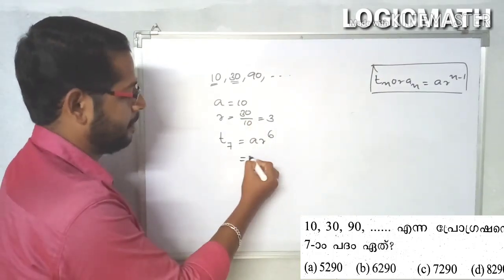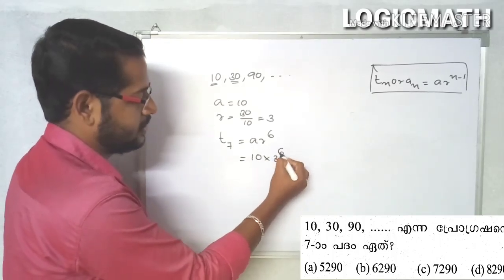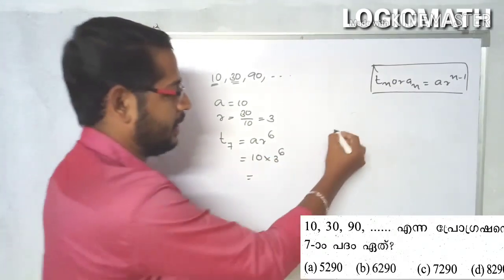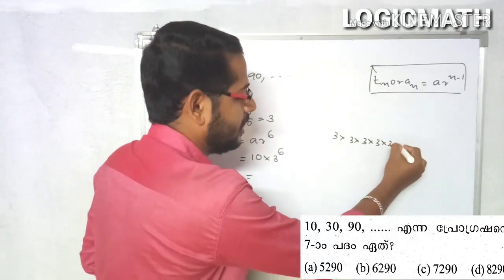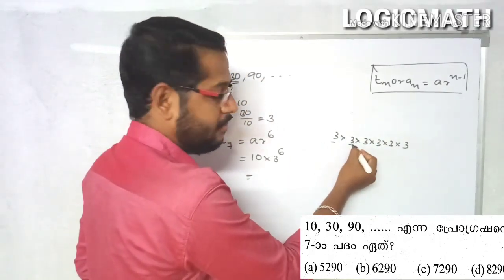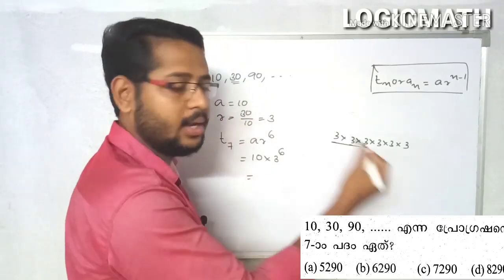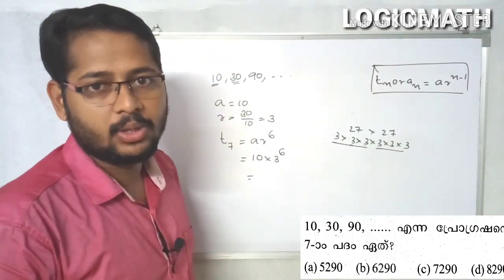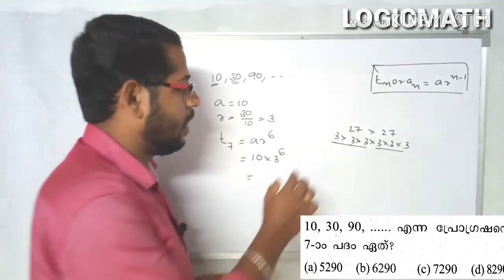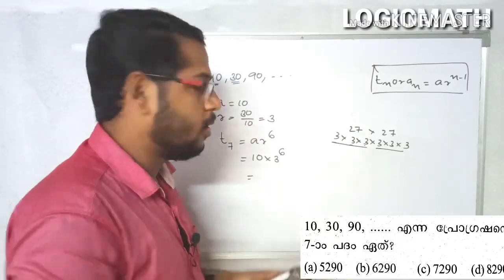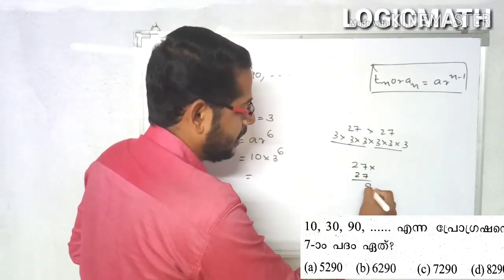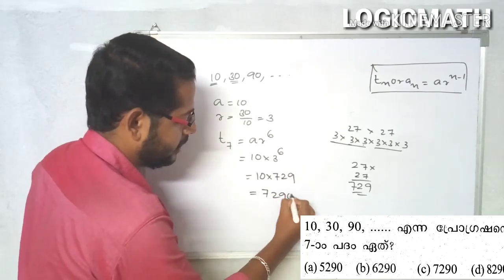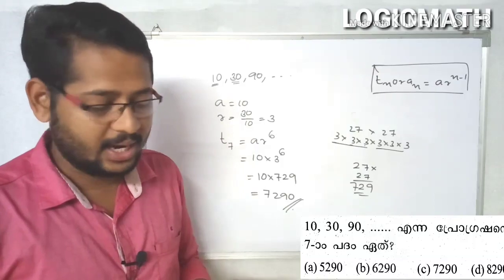Substitute 10. We have 3, 3, 3, 3 — that gives us 3, 9, 27. And 729. 10 into 729 equals 729. We will look at the left corner — this one will be important.